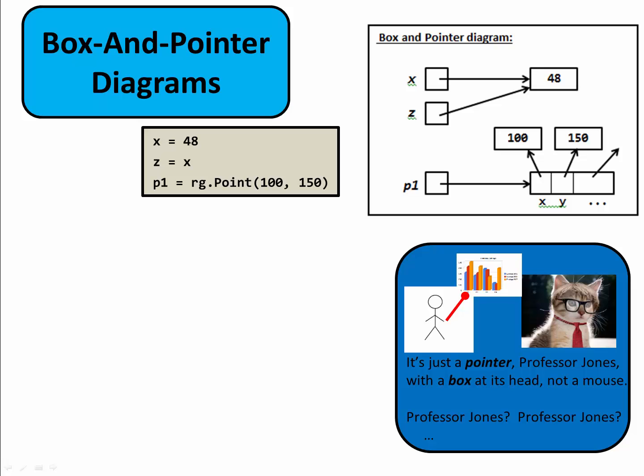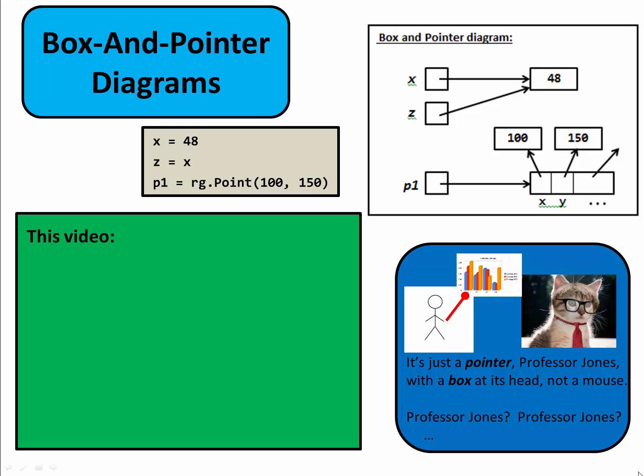In Python and other object-oriented languages, a variable is a reference to its value. Box and pointer diagrams are a standard way to explain this idea and its consequences in a visual form. A box and pointer diagram displays a snapshot of the variables and their values at a given point of execution of a program. This video will show you how to read and draw box and pointer diagrams.